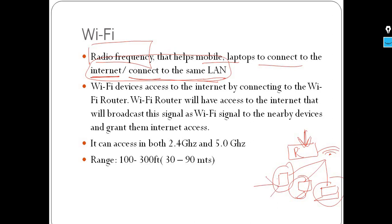If you connect to the LAN, you can connect only to the local LAN network. However, with Wi-Fi, there is also internet accessibility available, which is the added advantage over a simple LAN connection.